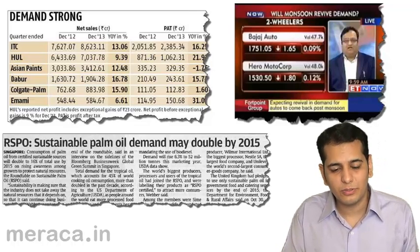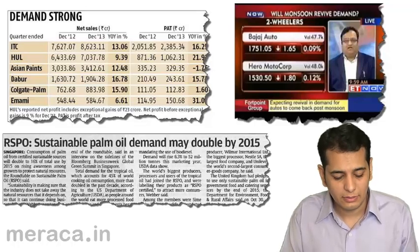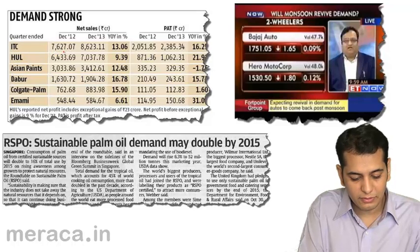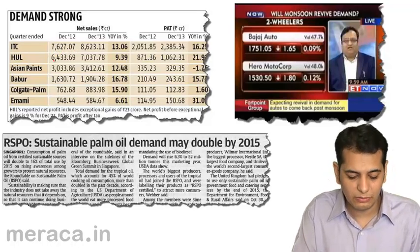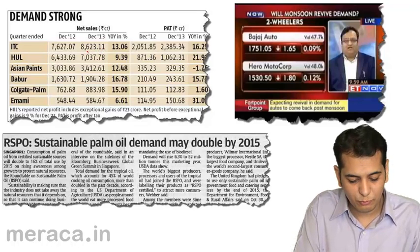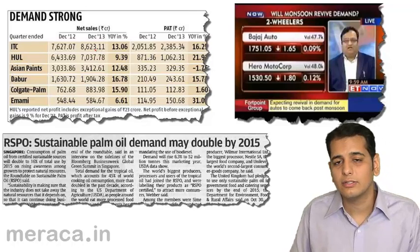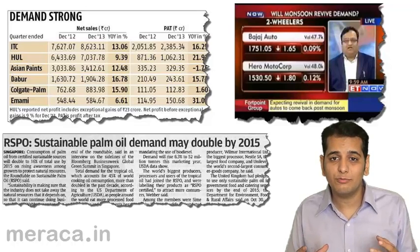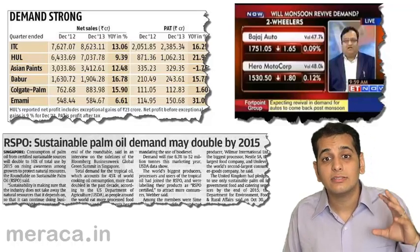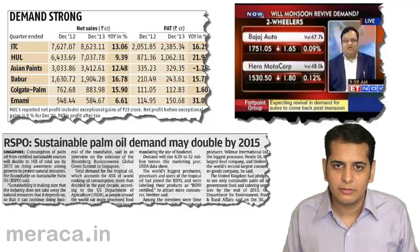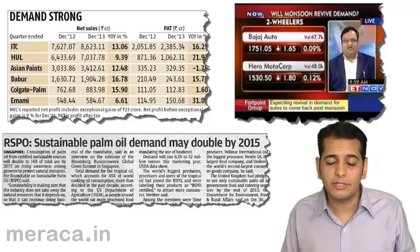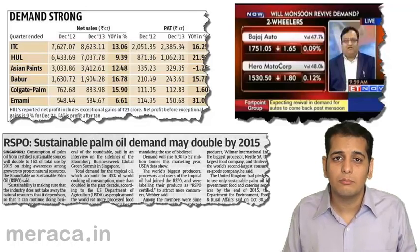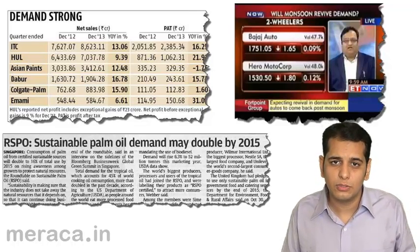First is December 12, next is December 13. This example shows us that the sales of ITC was 7627.07 in December 12, and during December 13, the same was 8623.11. This shows that the demand for the products of ITC has risen in a year's time. Comparing December 12 to December 13, ITC has done more sales, which means the demand for its products is more now, and that is why it is being able to sell more.